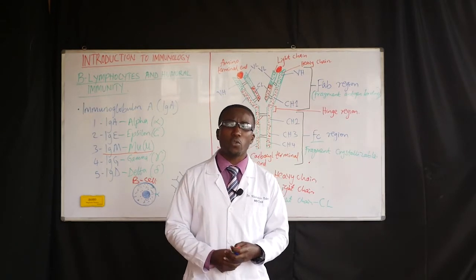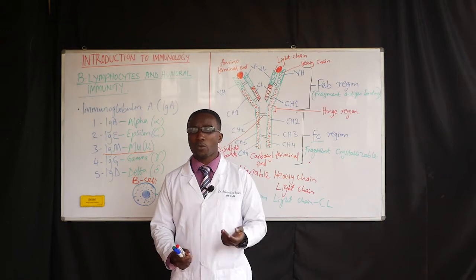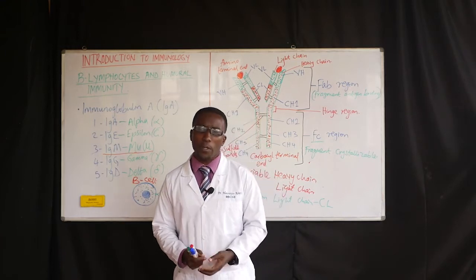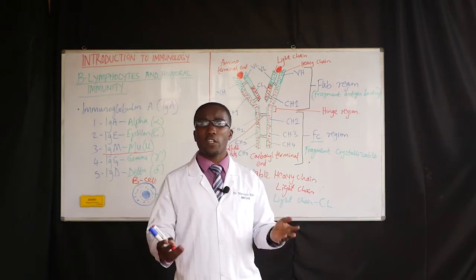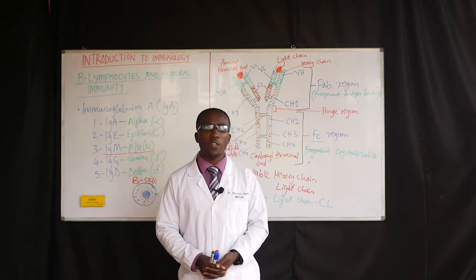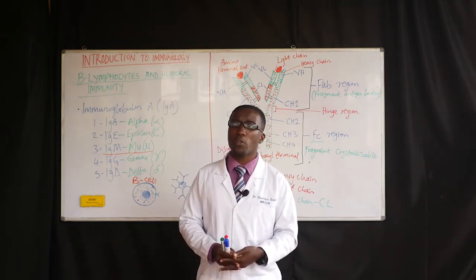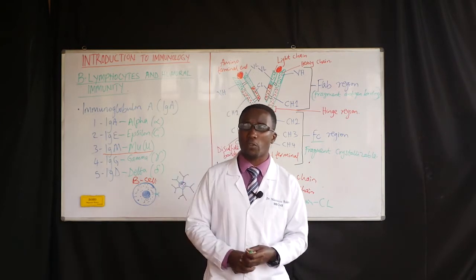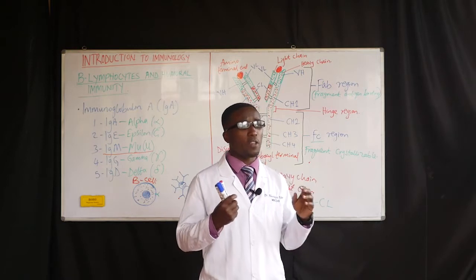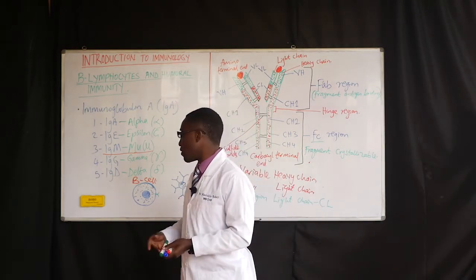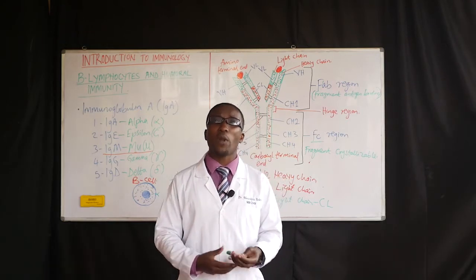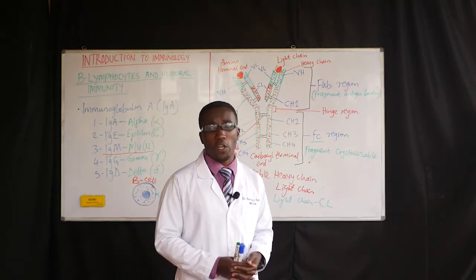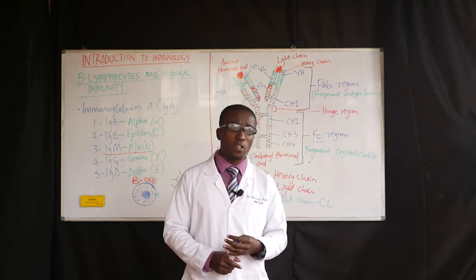I also need to inform you that immunoglobulin M is a major component of the rheumatoid factors — the autoantibodies involved in the pathogenesis of autoimmune disorders like rheumatoid arthritis. When investigating for rheumatoid factors in the laboratory, in most cases those factors are highly comprised of immunoglobulin M. So indirectly, we are usually looking for IgM, which denotes that condition.